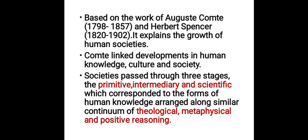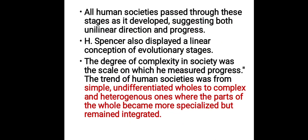Comte linked developments in human knowledge, culture, and society. He argued that societies pass through three stages — the primitive, intermediary, and scientific — which corresponded to forms of human knowledge arranged along a continuum of theological, metaphysical, and positive reasoning. All human societies passed through these stages, suggesting both a unilinear direction and progress.